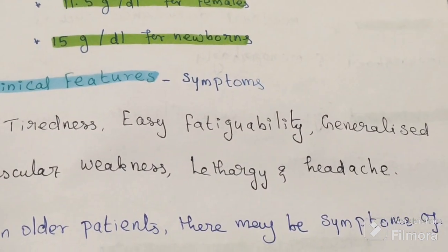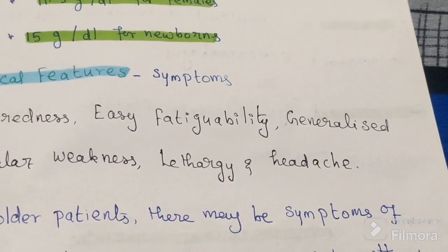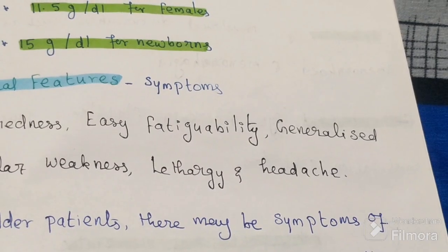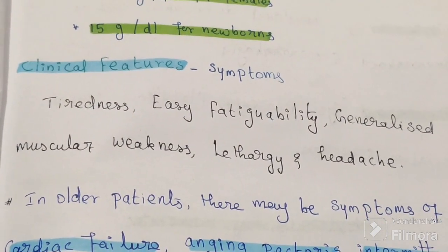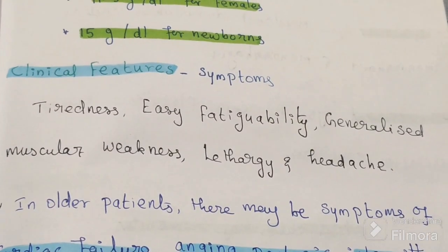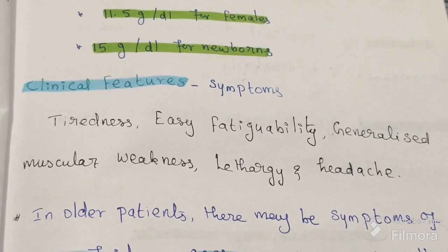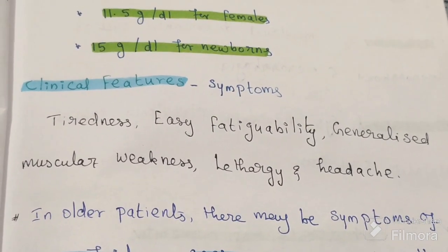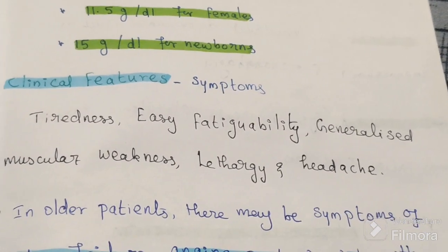Now, the clinical features and symptoms of anemia. Clinical features are common for all types of anemia because RBC mass is less, hemoglobin level decreases. Hemoglobin is required for oxygen transport, so oxygen is less in the body, resulting in less ATP production. So in all types of anemia: tiredness, fatigability, muscular weakness, and lethargy are the common symptoms.